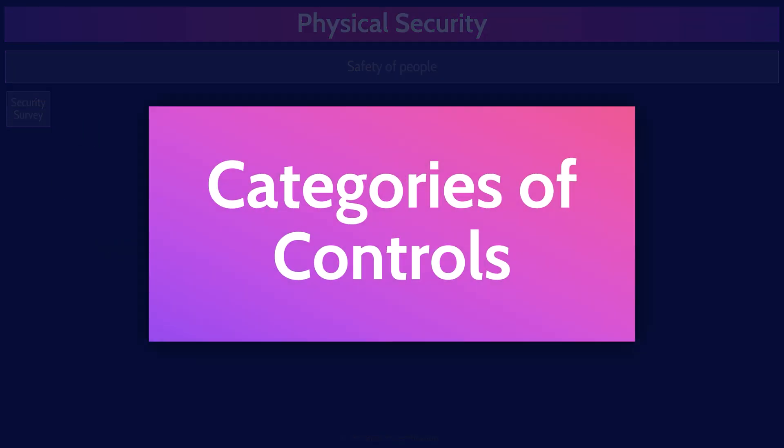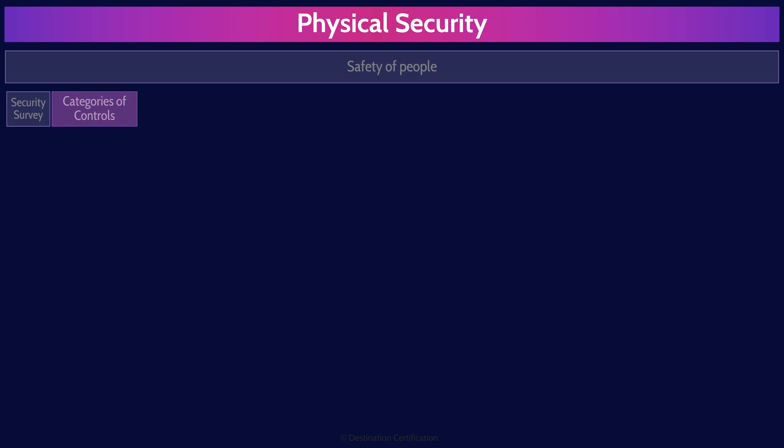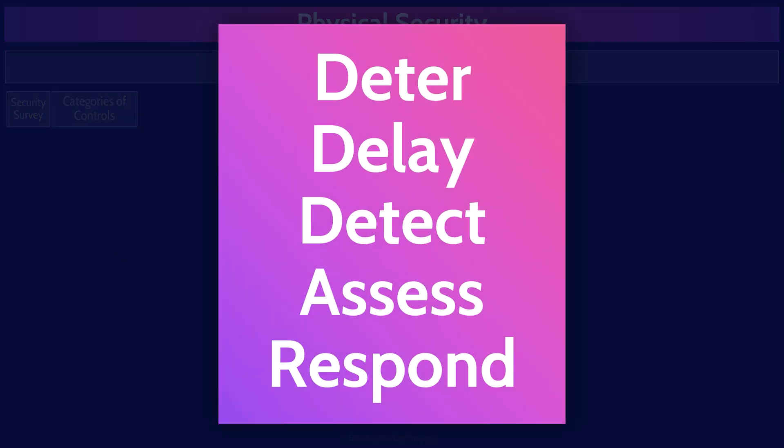There are five categories of physical security controls that you should know about: deter, delay, detect, assess, and respond. Deter controls discourage things like trespassing, property damage, theft, and intrusion through signage and environmental design of a building and the land around it. Delay controls delay a risk from occurring; for example, locks delay an attacker from gaining unauthorized access. Detective controls detect if a risk has occurred — CCTV cameras are a perfect example. Assess controls are used to determine the method of attack and the target. And finally, respond controls are appropriate actions taken to remediate the risk.